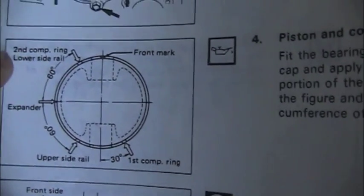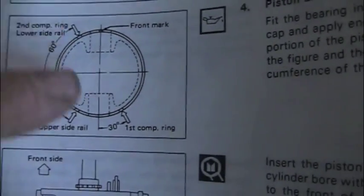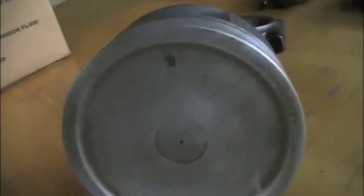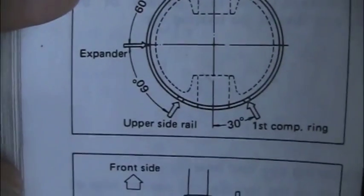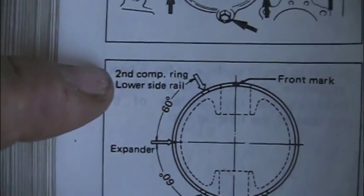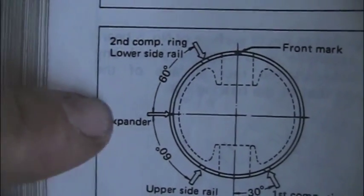You've got the first compression ring and a second compression ring. These are the gaps that correspond. On this piston you'd have first compression ring gap here, second compression ring gap up here. The oil ring is three parts: upper side rail, lower side rail, and the expander in between.